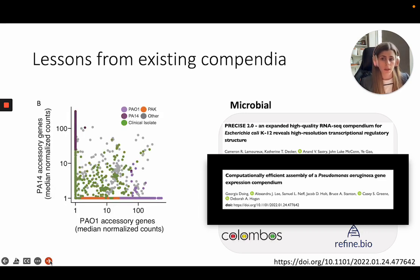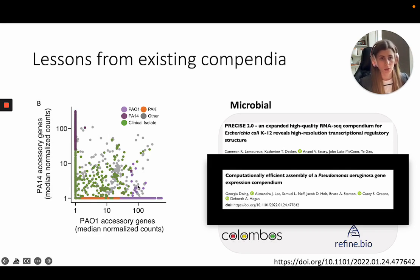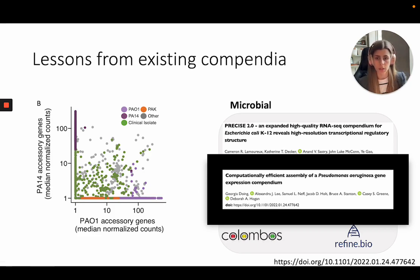The second lesson is that you need to use a reference pan genome instead of a single reference strain when mapping against these organism transcriptomes. Here I'm showing that for two strains of Pseudomonas, for a subset of different isolates, no single strain is the best reference — so if we combine all the genes across all the strains that we've observed, we get a much better reference set of genes.